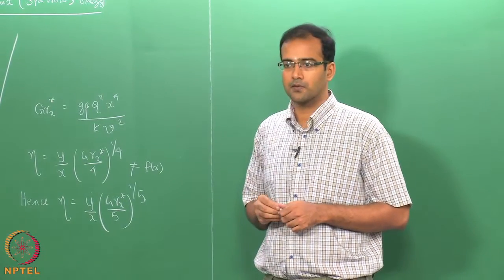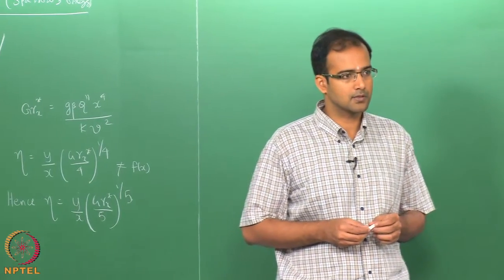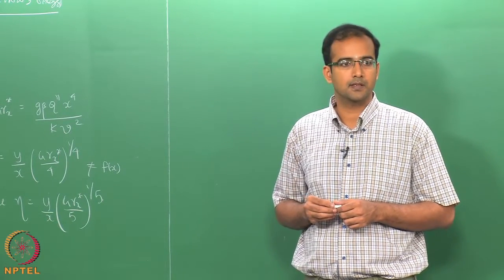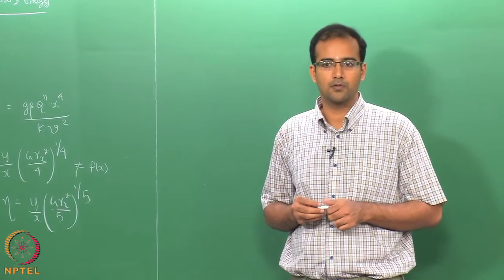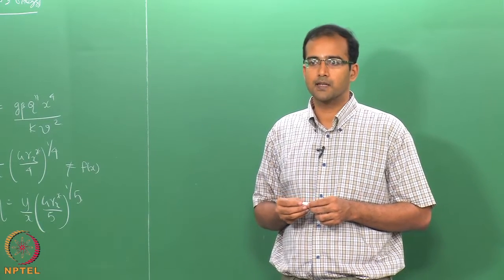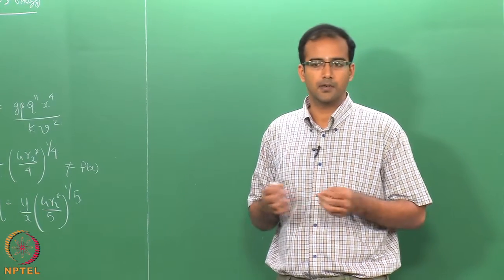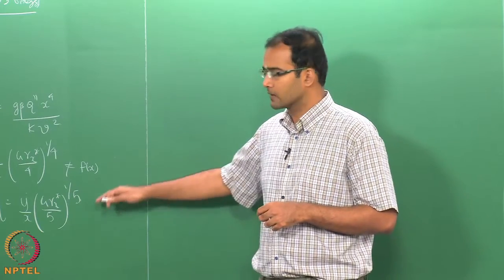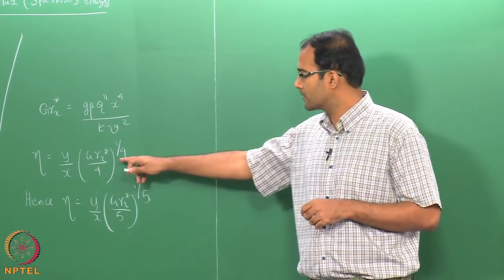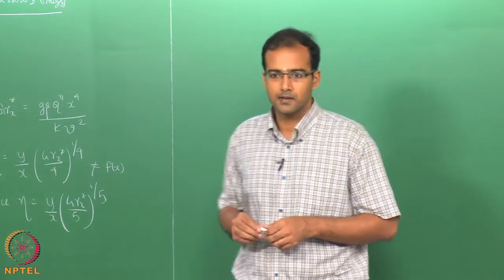Based on that, we have defined a modified Grashof number. If we look at the same similarity variable that Polhausen had used — eta equal to x times Grashof number by 4, whole power 1/4 — if you substitute the modified Grashof number into this, you will find that there is no dependence on x, which cannot be possible because the similarity variable has to be a function of both x and y. Therefore, Sparrow and Gregg modified the definition of eta, introducing the power 1/5 instead of 1/4, so it is now a function of both x and y.